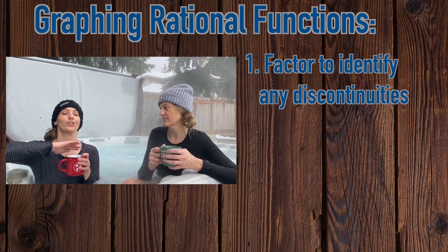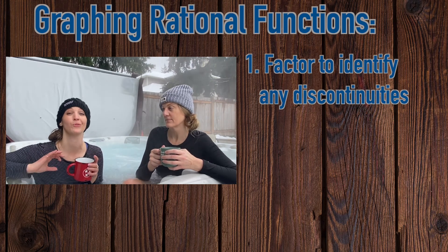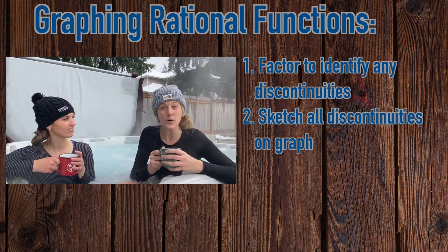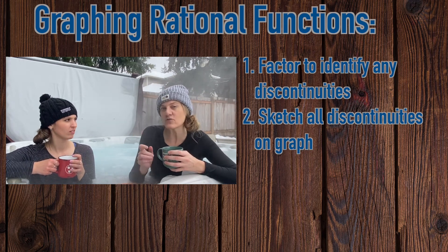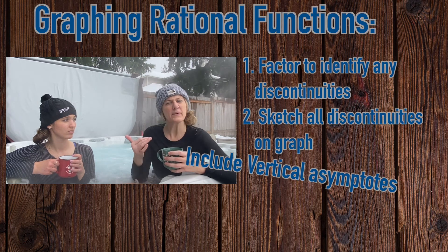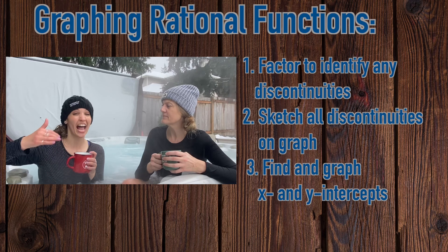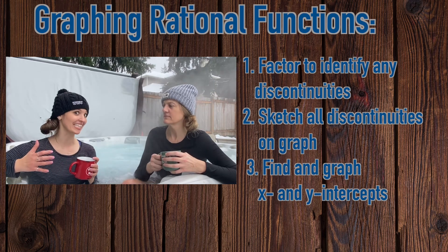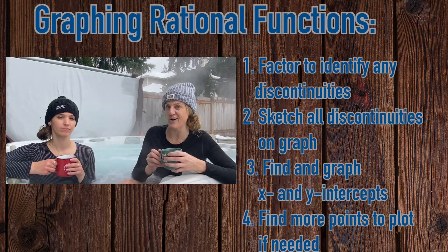Alright, do you think we should recap? Sure. When trying to sketch a rational function, first you want to make sure you factor the numerator and denominator to find any discontinuities. Then it's a great idea to go ahead and sketch those discontinuities so you don't forget. Now you should have already found your vertical asymptote, if any, but check for a horizontal asymptote as well. Then you can find your x and y intercepts if they exist, and if needed, more points so that you're sure of the behavior of the graph.